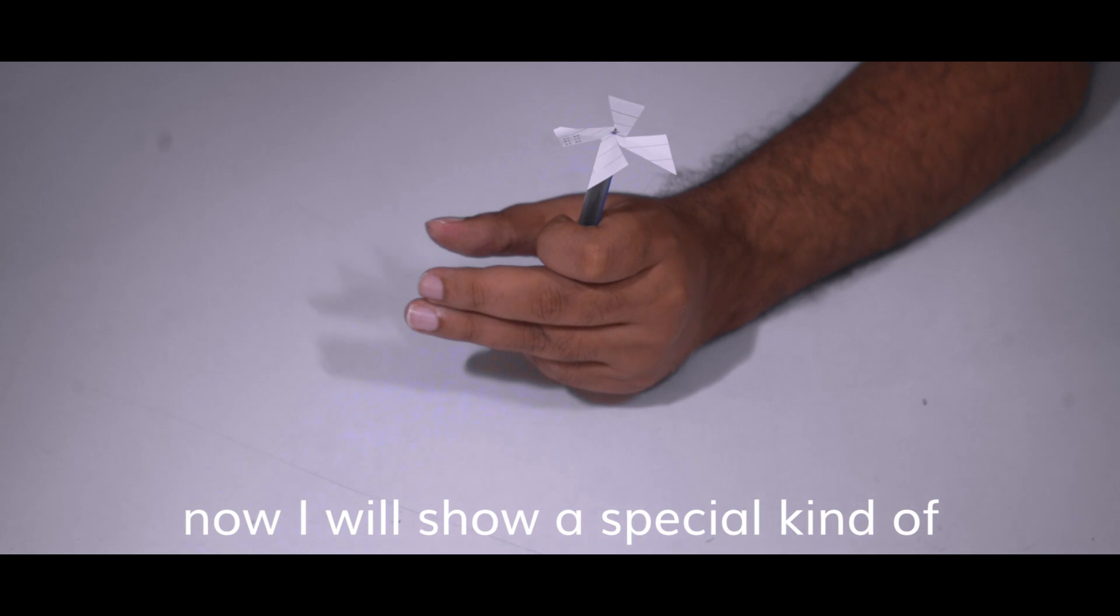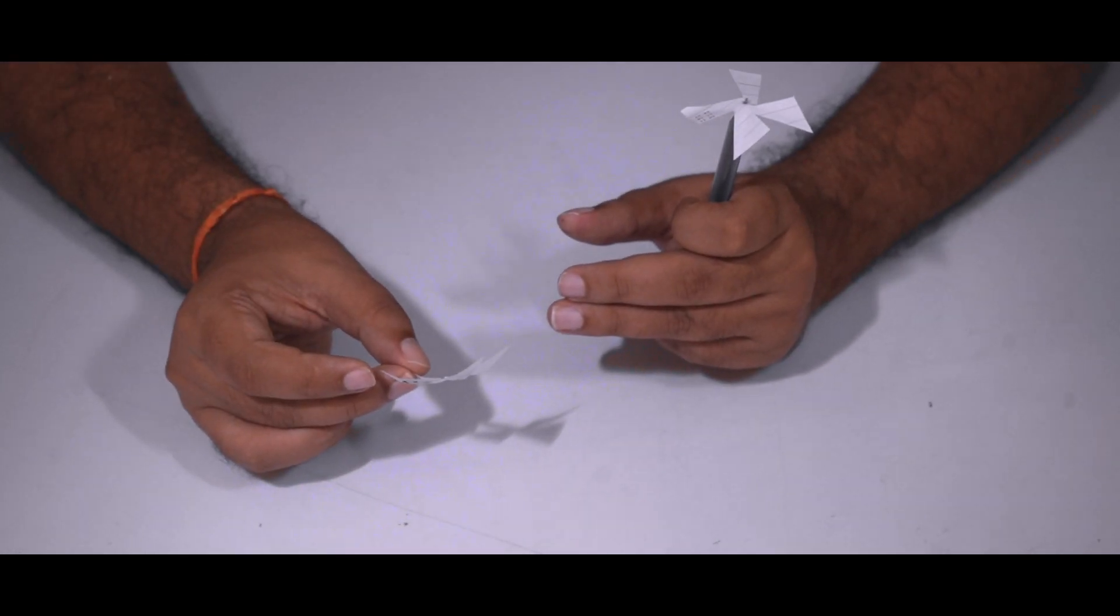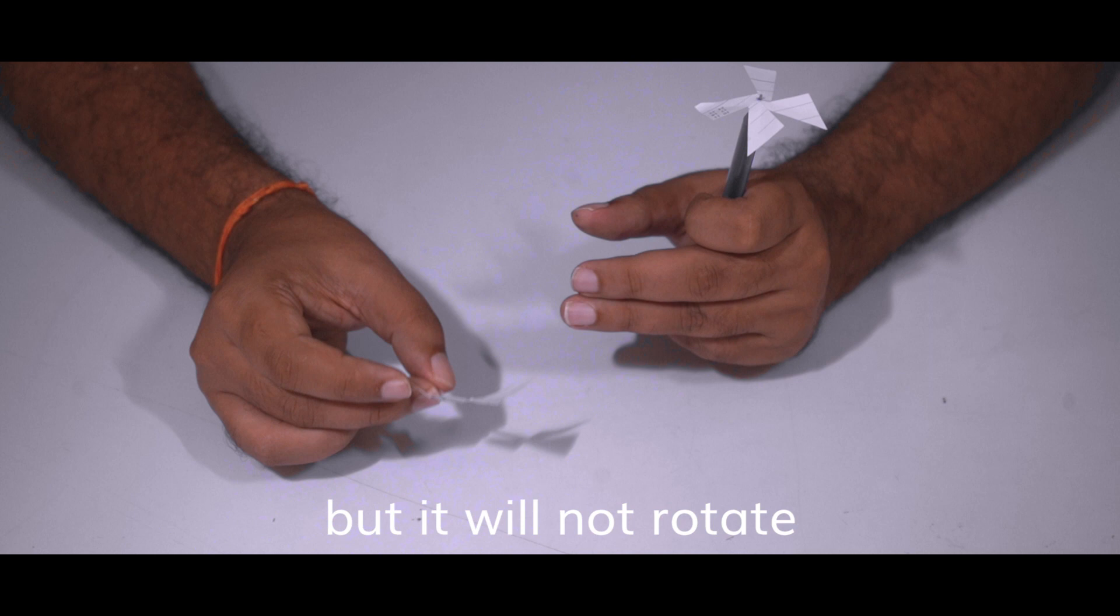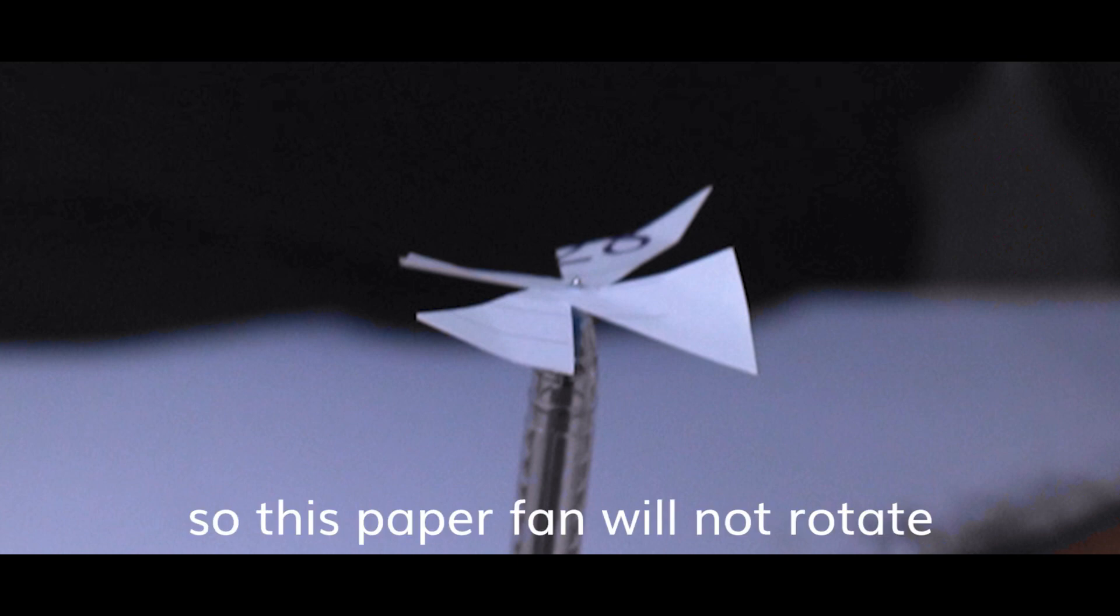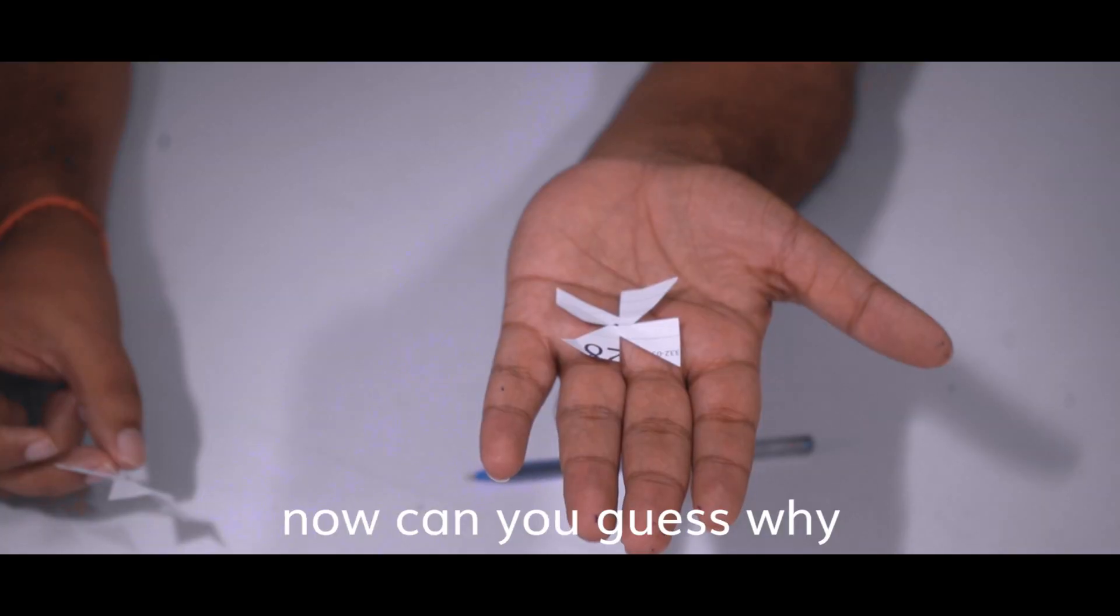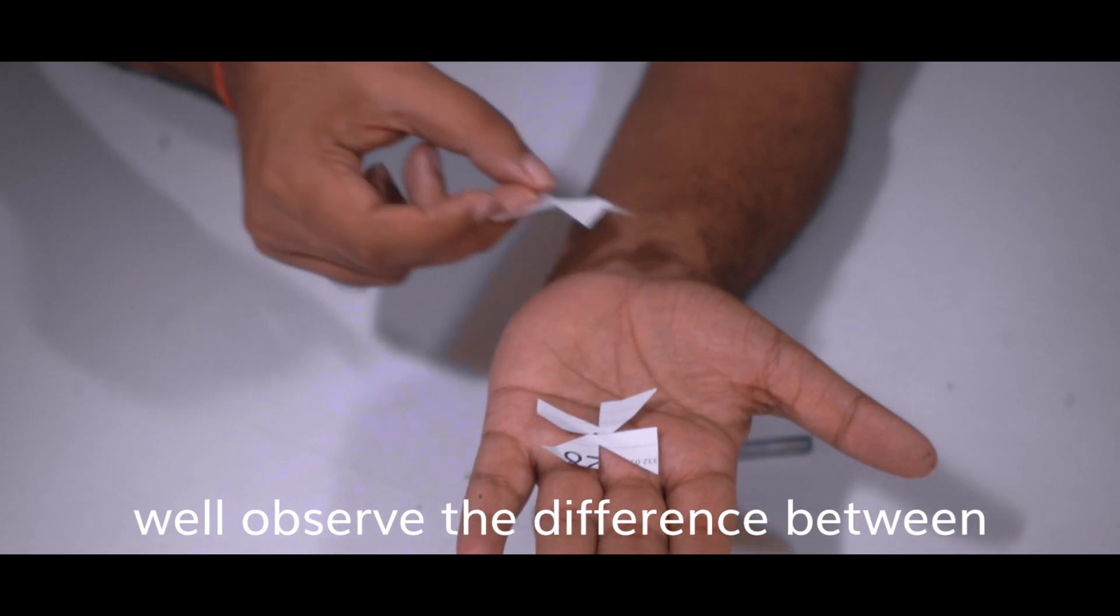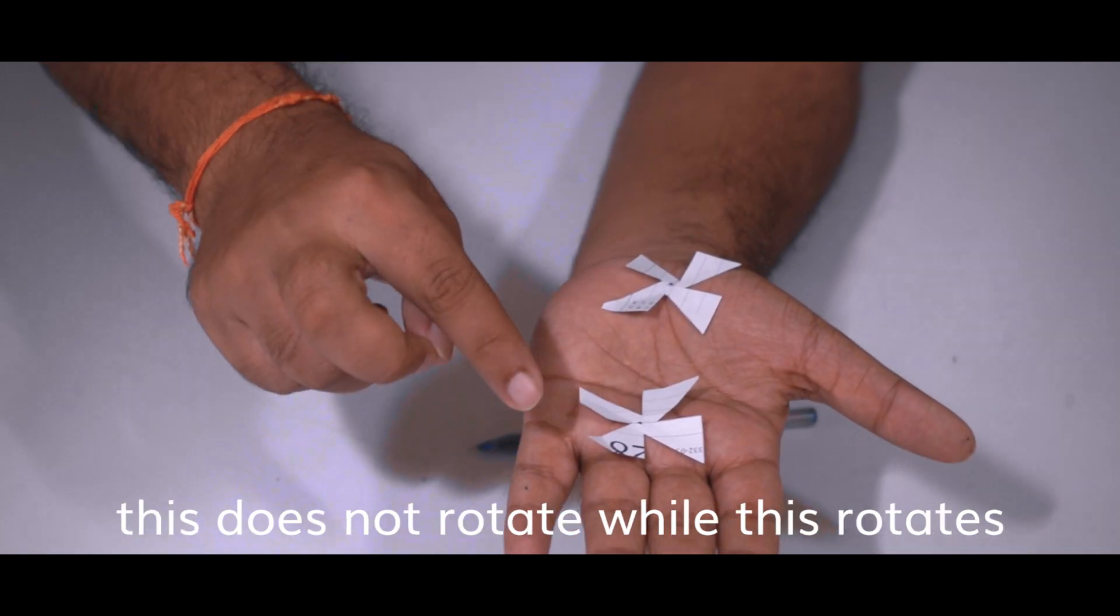Now I'll show a special kind of paper fan where the blades are tilted, but it will not rotate. So look at this paper fan. Now this paper fan will not rotate. Can you guess why? Well, observe the difference between this, which does not rotate, while this rotates.